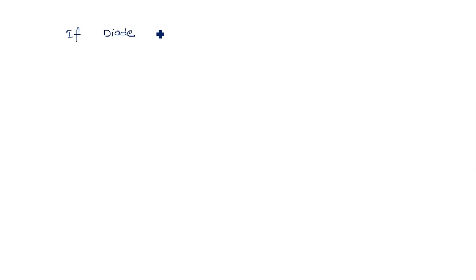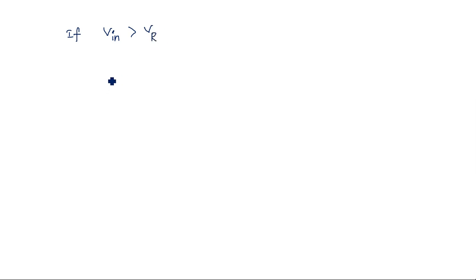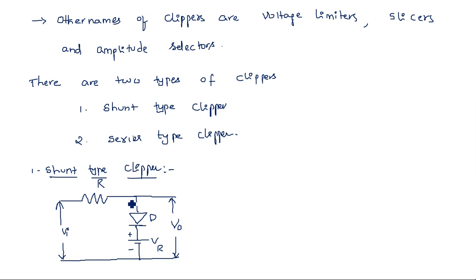We can better analyze this by comparing the reference voltage and the input voltage. There are two conditions: if input voltage Vin is greater than Vr, or if Vin is less than Vr. Up to the point in the circuit where we have the resistor, we will have the input voltage. The diode comes into ON or OFF state by comparing Vin and Vr.